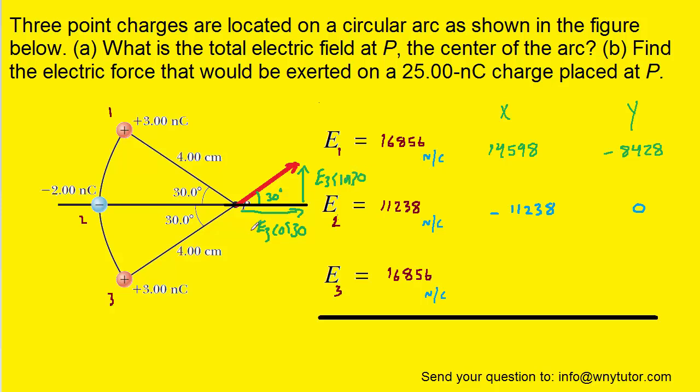Notice they're both positive because the x component is pointing to the right, which is the positive x direction, and the y component points up, which is the positive y direction. So we'll fill those values into the table.